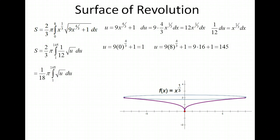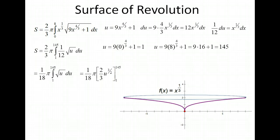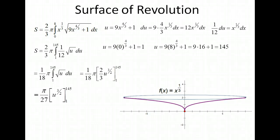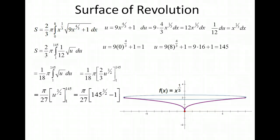Our endpoints of integration are from 1 to 145. Simplifying our fraction, we get pi over 18 times the integral of the square root of u du. Taking the integral of the square root of u gives us 2/3 u to the 3/2, then we plug in our endpoints. We have pi over 27 — simplifying 1/18 times 2/3 — times u to the 3/2. Plugging in 145 and subtracting the result at 1 (which is just 1) gives us our surface area. On the calculator, that's approximately 203 units squared.